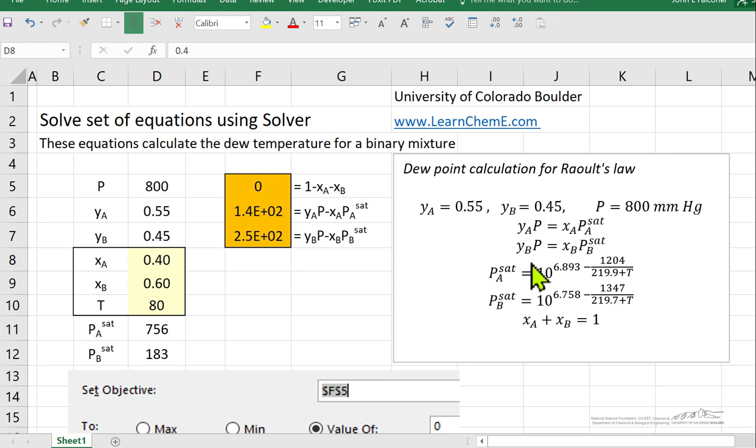And then in this equation, we're going to substitute PA Sat. And here's an expression for PA Sat. So our unknowns are temperature here, XA and XB. And we're given YA, YB and pressure.